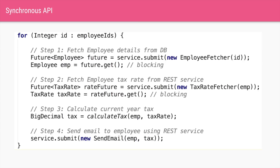There is also a problem of synchronous API. Suppose you have a for loop that iterates through all employee IDs, and for each ID there are functions that fetch the employee object and then fetch the tax rate for that employee. Even though on this thread we are not performing the actual fetching ourselves — we are offloading that to an ExecutorService — the ExecutorService gives us back a Future. A Future is a promise that says it does not have the value right now, but when you call future.get(), this whole thread will block until that operation is finished.